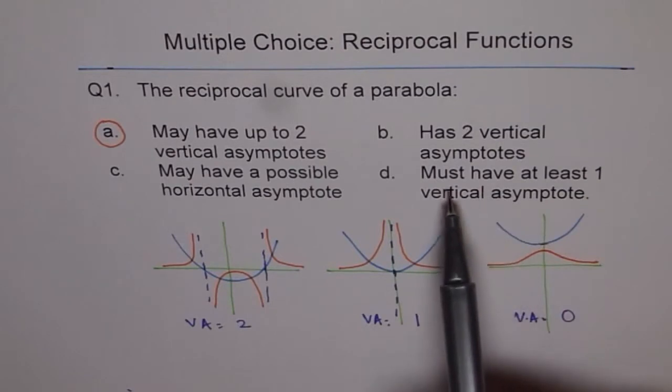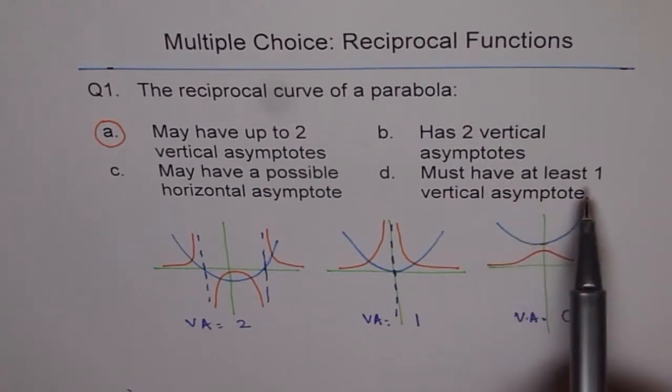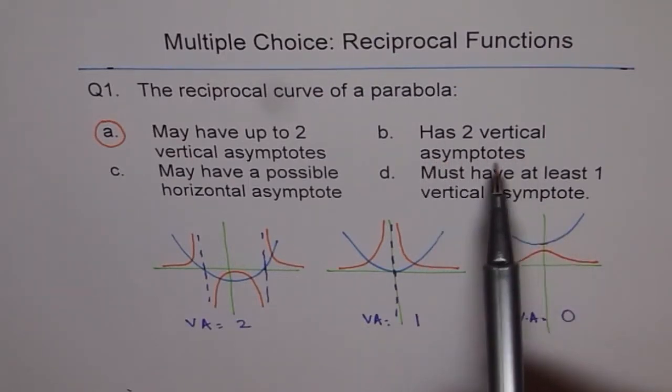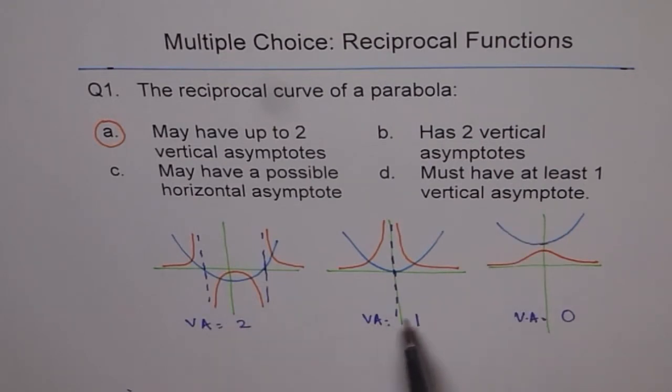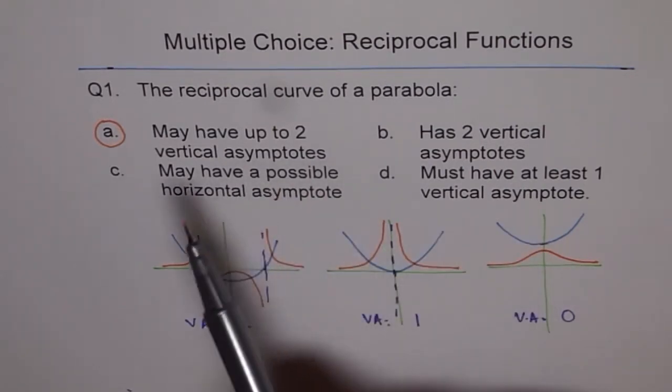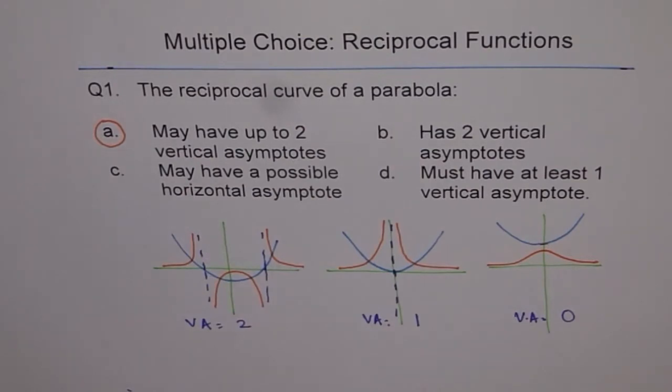'Must have at least one vertical asymptote' is absolutely wrong. We have seen there can be zero. 'Has two vertical asymptotes'—it can have any combination: zero, one, or two. So the best option is A. That's how we answer it, and that's the reason. Thank you.